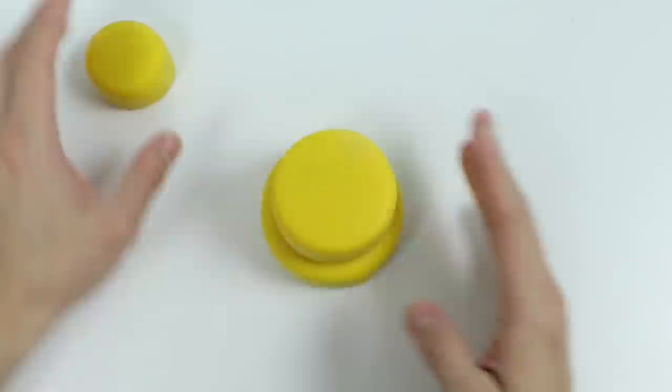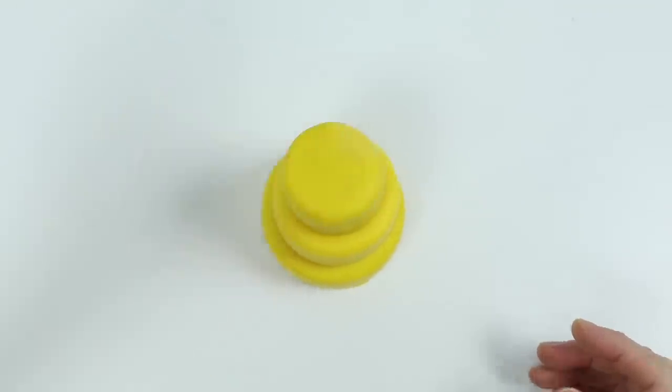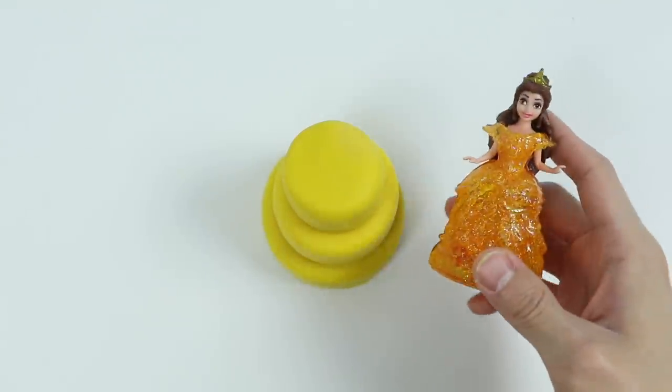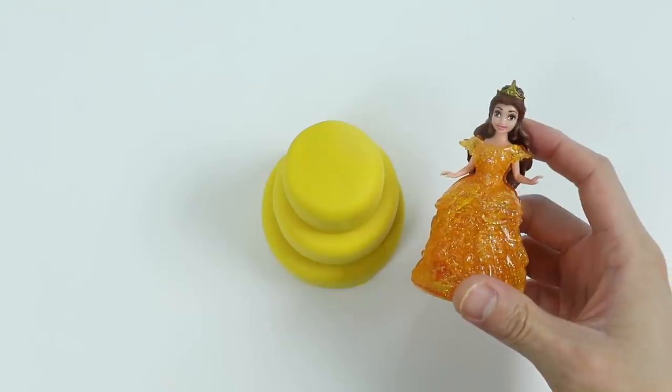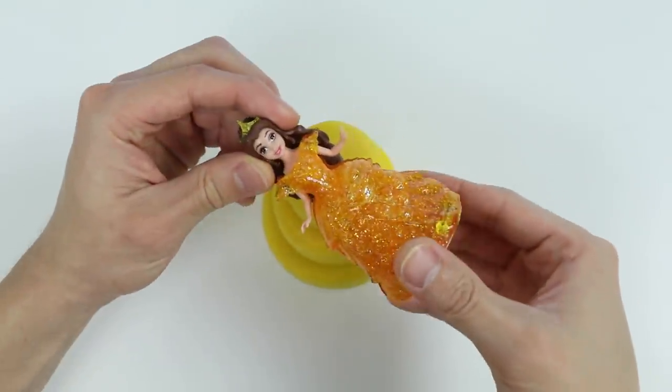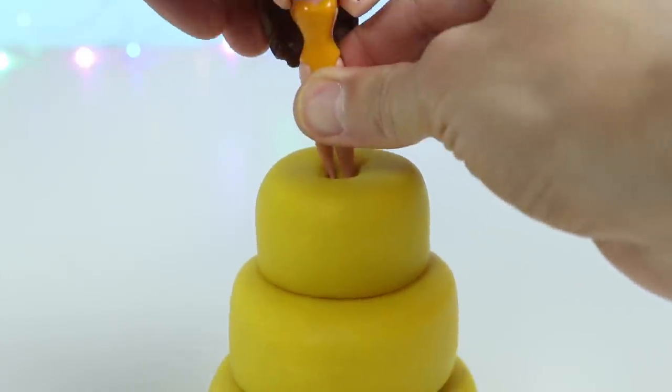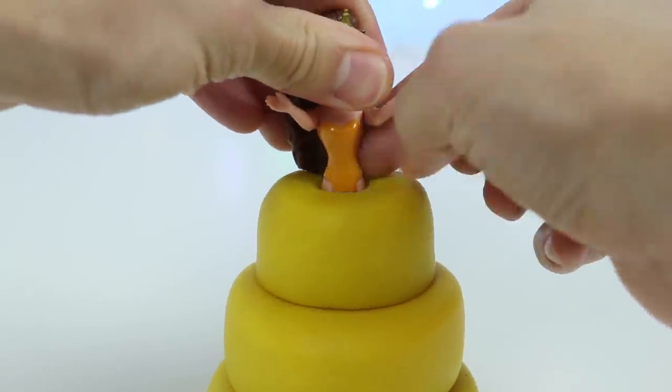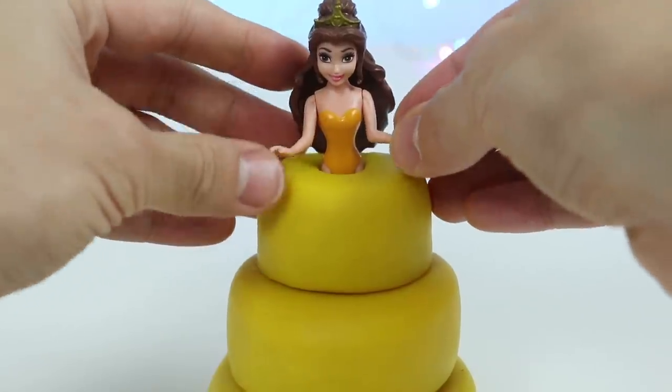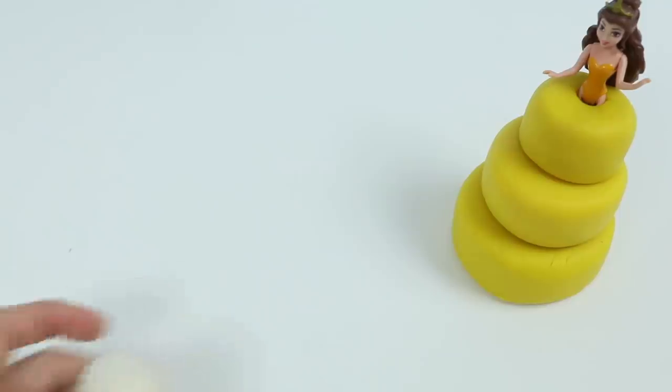All right, now that we've made our layers, let's stack the layers on top of each other. And since this is a Play-Doh princess dress cake, let's put Princess Belle on top of this yellow cake dress. Now it's time to decorate this cake. Let's start by rolling out some white Play-Doh.